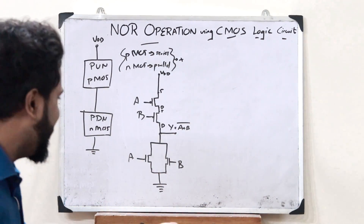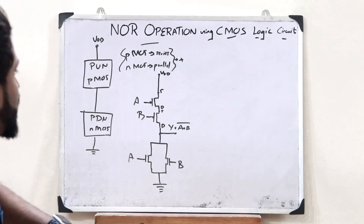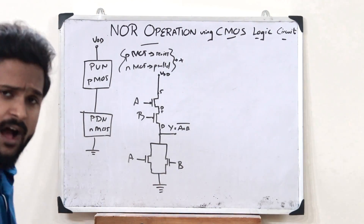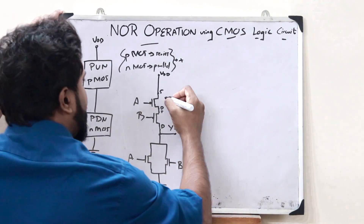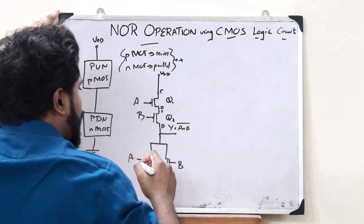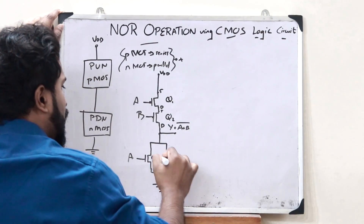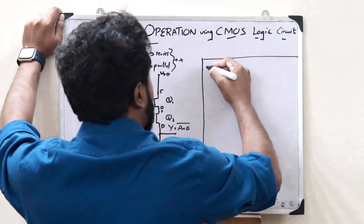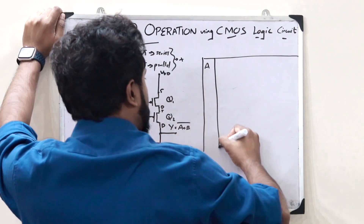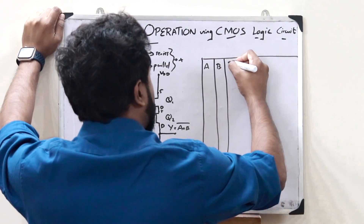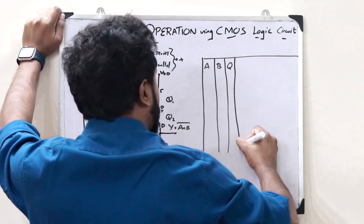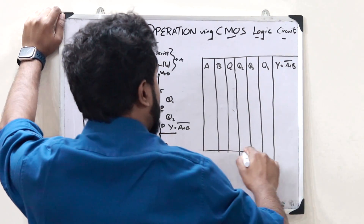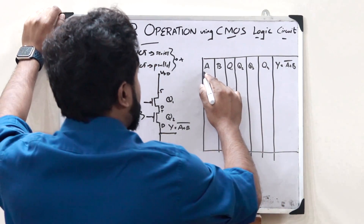As simple as that. This is simply how we construct the logic circuit for performing the NOR operation using CMOS logic. Now let us see how this works. Let us label this transistor as Q1, this one as Q2, this as Q3, and this as Q4. Let us take the condition for all these. We have input A and input B, transistors Q1, Q2, Q3, and Q4, and output Y = (A OR B)'. Let us verify that this is what happens.